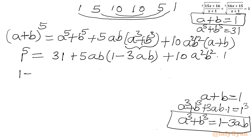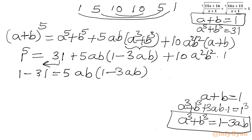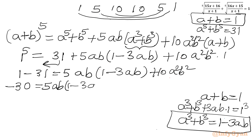Substituting a³ + b³ = 1 − 3ab back in: 1 = 31 + 5ab(1 − 3ab) + 10a²b². Rearranging gives −30 = 5ab(1 − 3ab + 10a²b²).